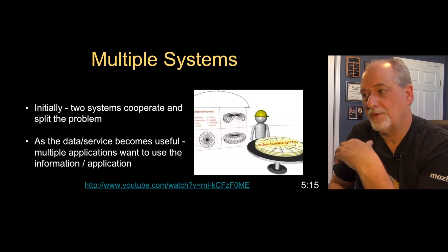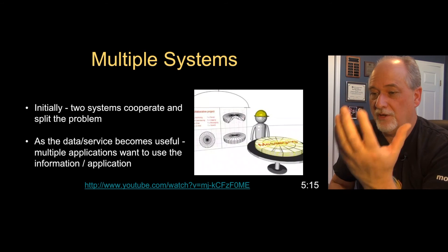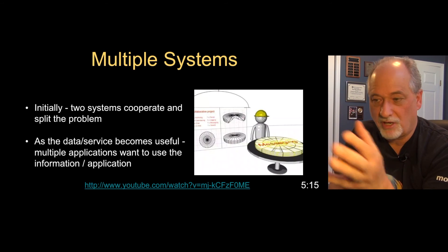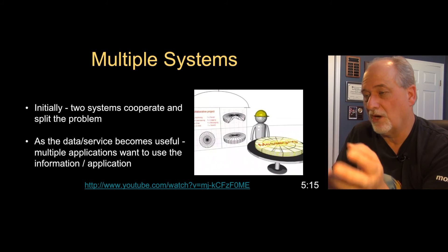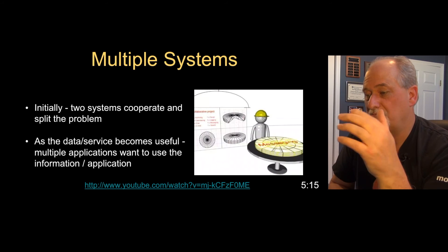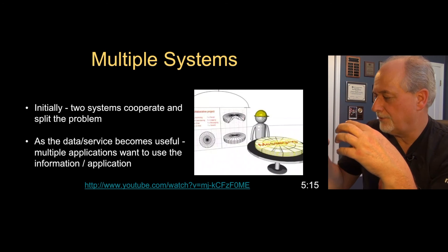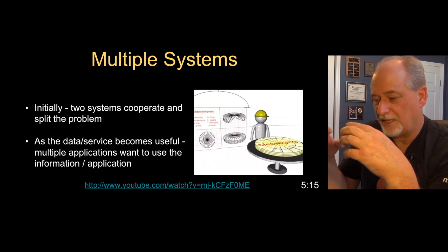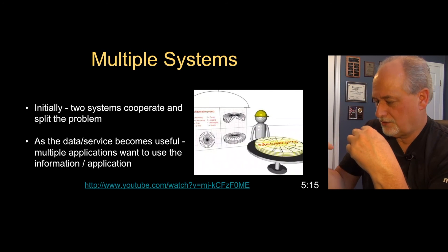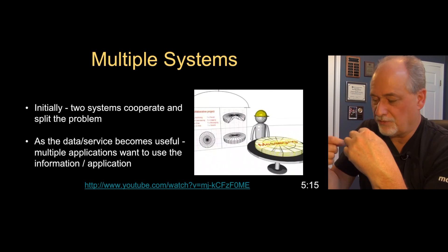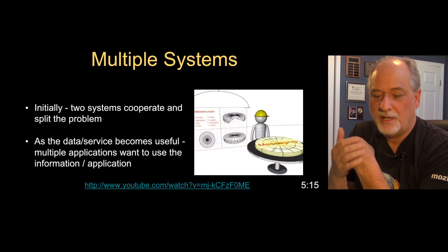When you're building a service-oriented architecture, often you start with one application and it's all internal — often all one language. And then maybe you say, wait, we want to take part of what we do and put it in a second system, and then sort of come up with a set of rules between the systems, and then more and more.